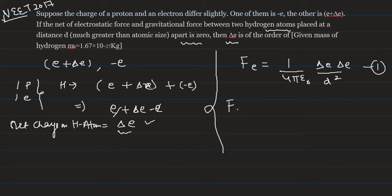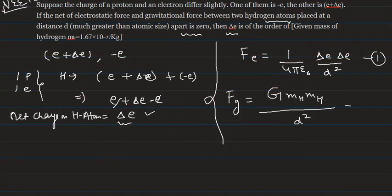Similarly, we have the gravitational force between two hydrogen atoms. Gravitational force is Fg = G × mH × mH / d². So students, this is our second equation.